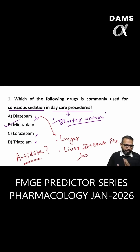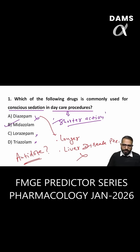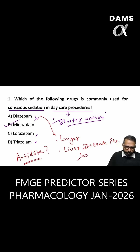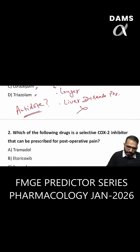The answer is flumazenil — that is the antidote drug for benzodiazepines. So the first topic we need to revise is benzodiazepines.